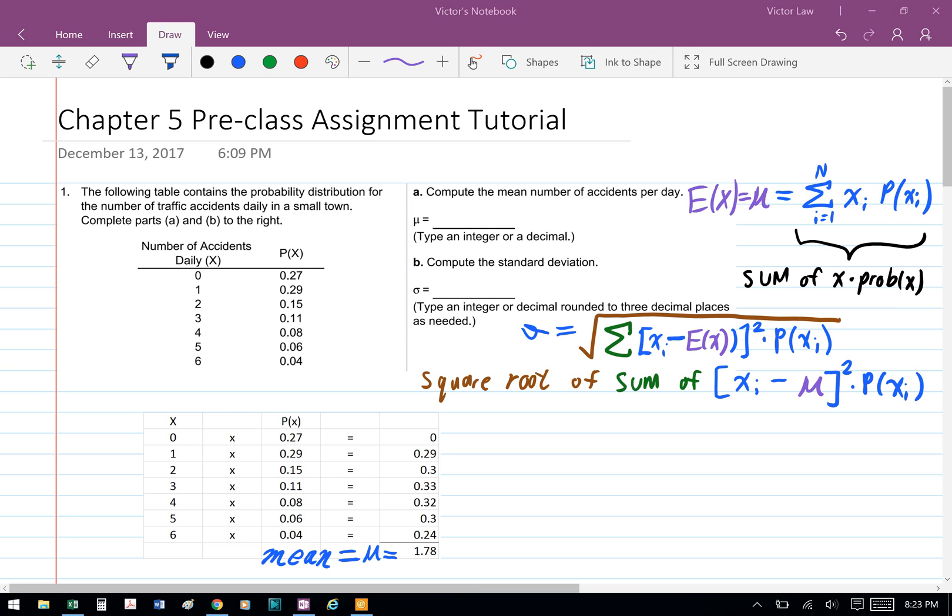Part B: To compute the standard deviation, we're going to take the square root of the sum of bracket x minus the mean bracket square, and then we're going to times it by the probability.